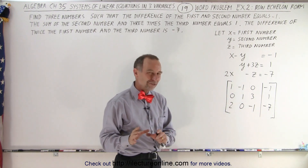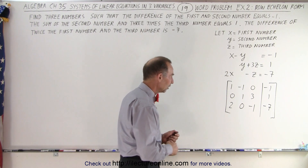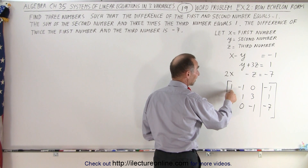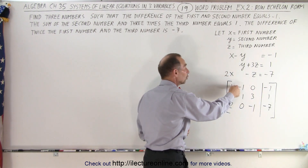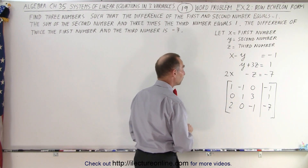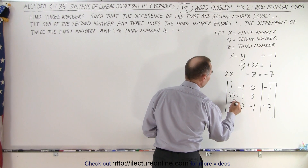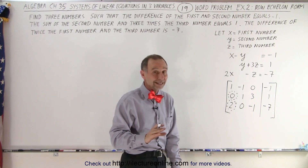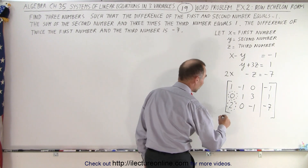What we're trying to do is get ones across the diagonal and zeros everywhere else below it. Notice I picked a fairly simple problem to illustrate how it's done. The first thing you want to do is get a one in the first position. If it's not already a one — say it was a two — you'd divide everything in that row by two, but since it's already a one we don't have to do anything.